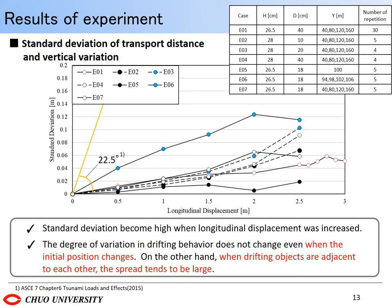The spread of these experiments was smaller than that. In all cases, it can be seen that standard deviation becomes high when longitudinal displacement was increased. The 6 cases other than E06 tended to spread more slowly and the standard deviation values up to a travel distance of 1.5m were almost the same. This shows that the degree of variation in drifting behavior does not change even when the initial position changes. From this, it is considered that the drifting area of objects can be evaluated from parameters of the wave height and the movement distance at the shoreline position. On the other hand, when the drifting objects are adjacent to each other as in E06, the spread becomes large, which is considered because the objects interfere with each other and the flow condition changes.